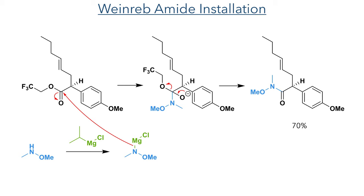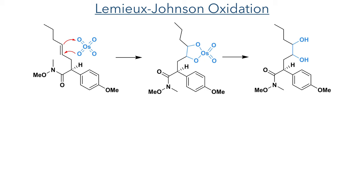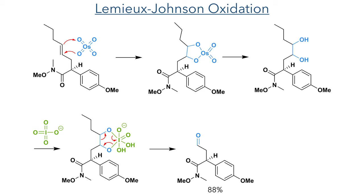Taking this compound forward, they then carried out a Lemieux–Johnson oxidation. Osmium tetroxide first undergoes a [3+2] cycloaddition with the double bond, forming a cyclic intermediate, which is then hydrolyzed to generate a 1,2-diol. The diol then reacts with sodium periodate to form a cyclic hexavalent iodine species, which undergoes a cycloreversion to break the carbon–carbon bond and form an aldehyde in an 88% yield.